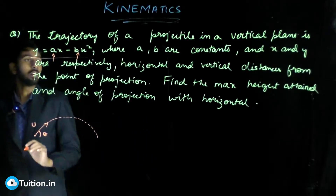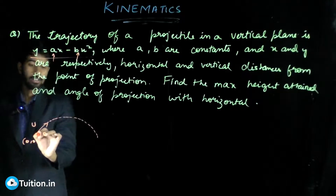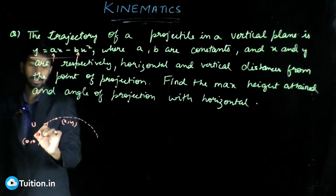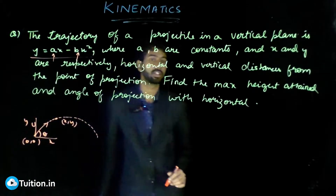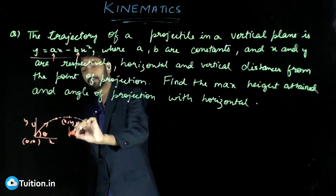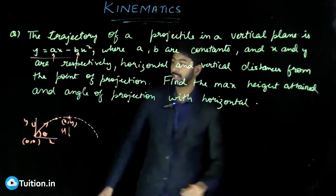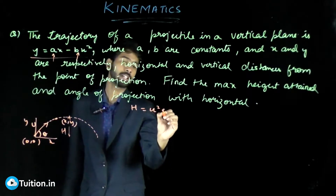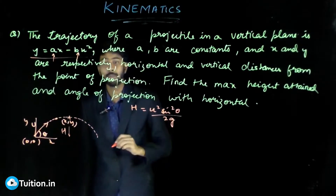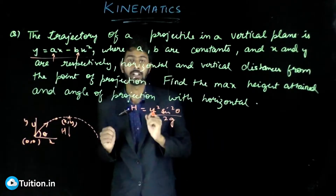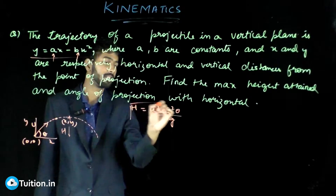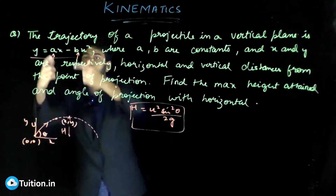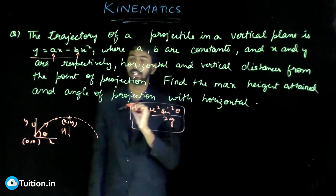If the body is at a point with coordinates x and y, the horizontal distance is x and the vertical distance from the point of projection is y. We need to find the maximum height and the angle of projection theta with the horizontal. The formula for maximum height is u² sin²θ / 2g. You can derive it during the exam if needed, but it's advisable to remember it. We'll compare our derived equation with the given one to find a and b, then express h in terms of a and b.